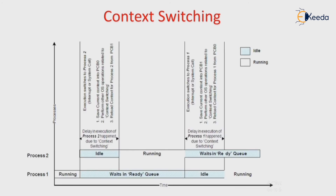Let's see context switching illustrated. Here, there are two processes: Process 1 and Process 2, each with running, ready queue, and idle states. When Process 1 is running, Process 2 is in the idle state. When Process 2 is running, Process 1 remains in the queue state. After Process 2 completes, Process 1 moves from idle back to the running state. In this way, context switching works.